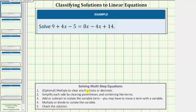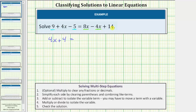Following the guidelines to solve multi-step equations, the first thing we do is simplify each side by clearing parentheses and combining like terms. Notice on the left side we have two constant terms, and on the right side we have two x terms. So on the left side, nine minus five equals four, and the left side simplifies to four x plus four. On the right side, eight x minus four x is four x, so the right side simplifies to four x plus fourteen.